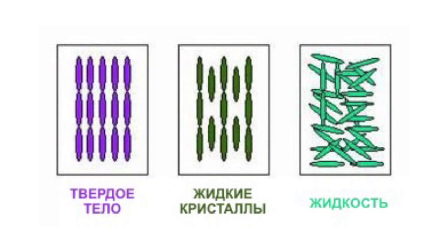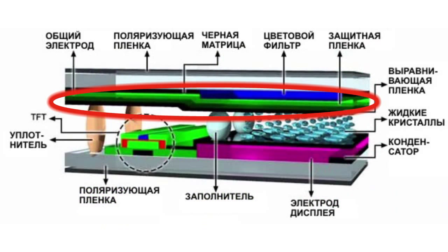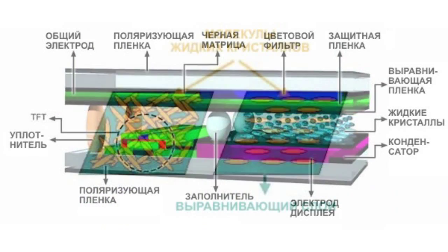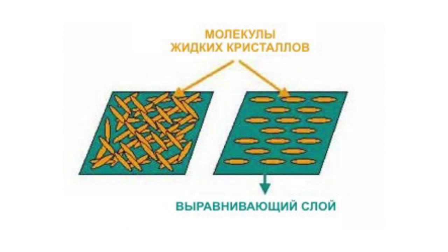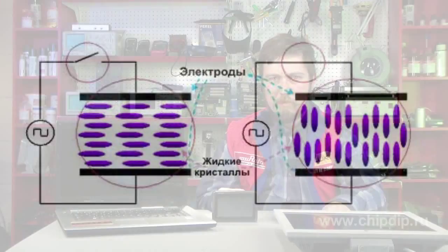Liquid crystals demonstrate different phases: solid body, liquid, crystal or liquid, and at different temperatures. A leveling film is applied to the two glass plates, upper and lower, and has a number of parallel grooves that ensure the alignment of liquid crystal molecules in the proper direction. When a voltage is applied to two electrodes of the LCD, the higher the applied potential, the faster the liquid crystal molecules unwind.